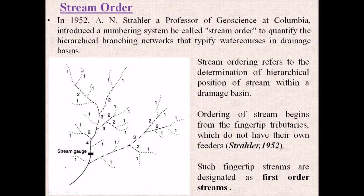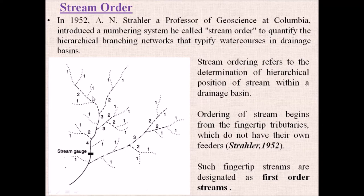The ordering of a stream begins from the fingertip tributaries — those that do not have their own feeders — and these are designated as stream order one. When two first-order streams meet at a point, the second-order stream begins. As long as a second-order stream meets only first-order streams, it continues to be a second-order stream. Only when another second-order stream joins it does the order increase.